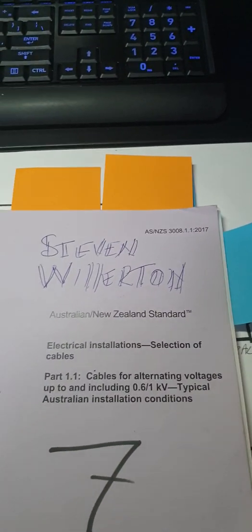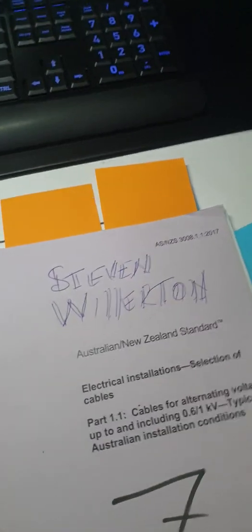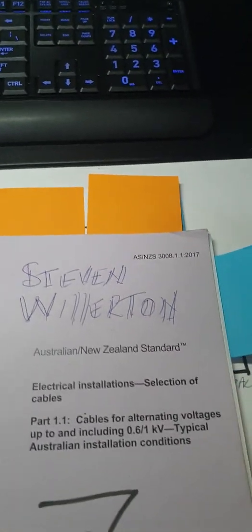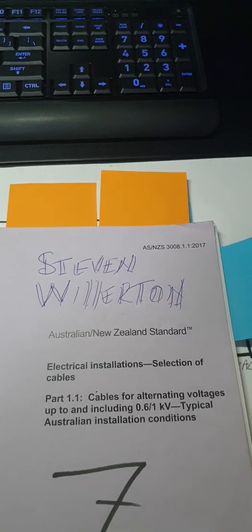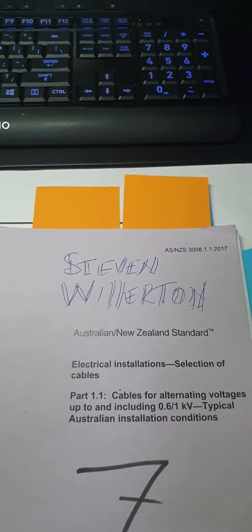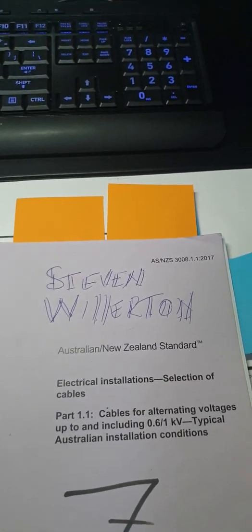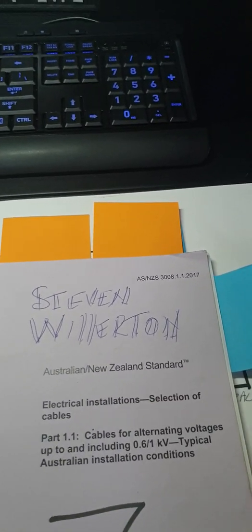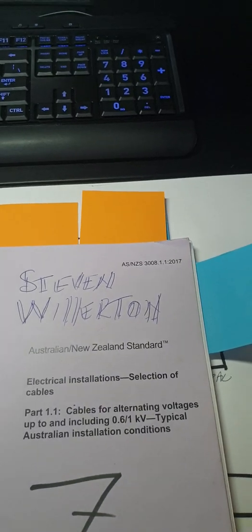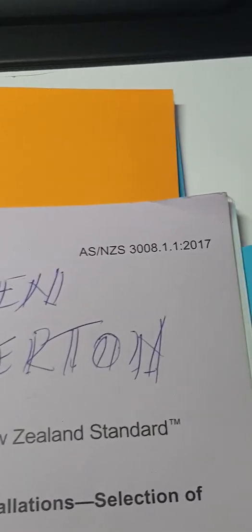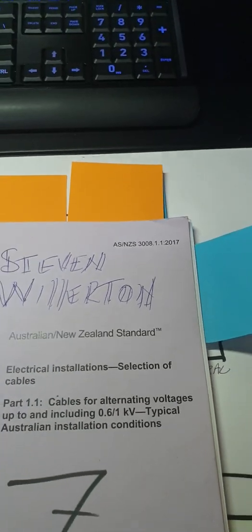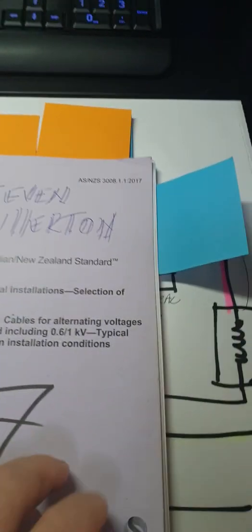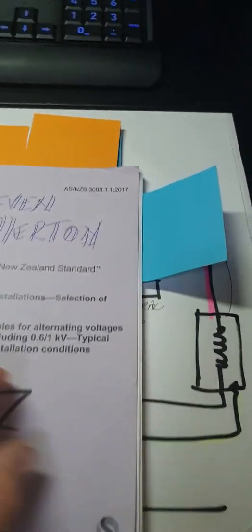Hi guys, I'm just going to do a little presentation on the 3008 book — things to mark up, how the tables work, and all the tables that you need to know for your LED. The first thing we're looking at is AS/NZS 3008 17, which is the most current version of the 3008 book.